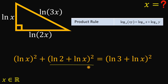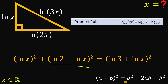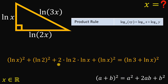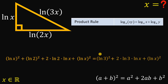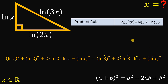To expand these, we use the identity (a + b)² = a² + 2ab + b². Expanding (ln 2 + ln x)² gives (ln 2)² + 2·ln 2·ln x + (ln x)². Similarly, (ln 3 + ln x)² gives (ln 3)² + 2·ln 3·ln x + (ln x)².